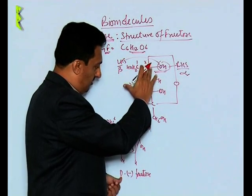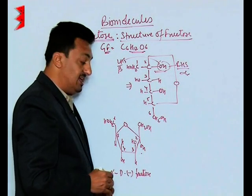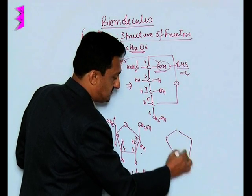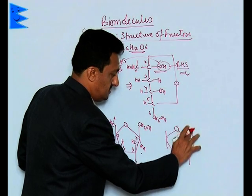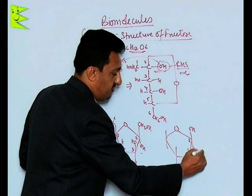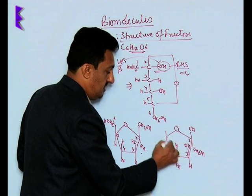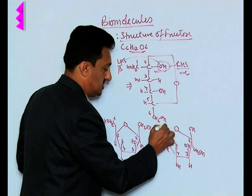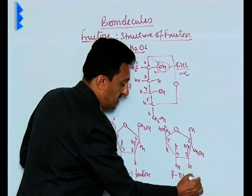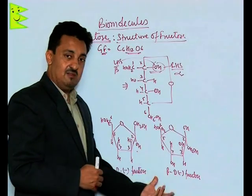When drawn in the furanose structure, if the OH comes downward it is alpha-D-minus fructose. For beta-D-minus fructose, the OH on the second carbon goes upward and the CH2OH comes down. The third carbon has OH, the fourth carbon has OH downward, and the fifth carbon has H and CH2OH on the sixth. These are the two anomeric forms — alpha and beta — of the fructose molecule.